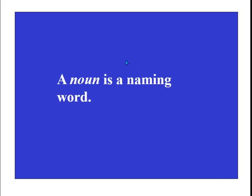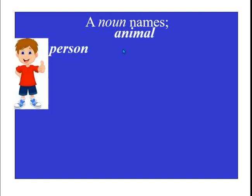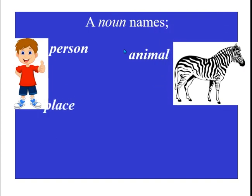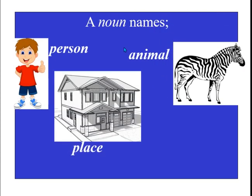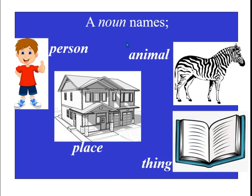So a noun is a naming word. A noun names a person, like Ben; an animal, like a zebra; a place, like your house or the market we saw; and a thing — a book is a thing.